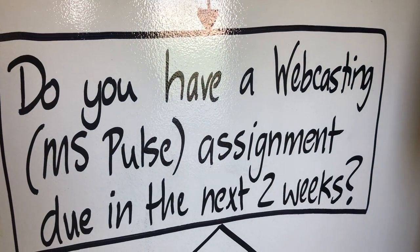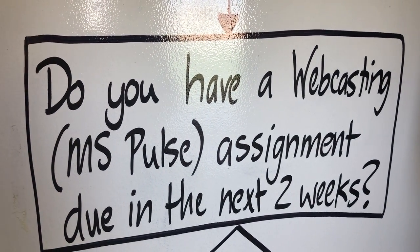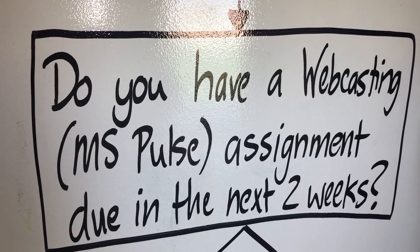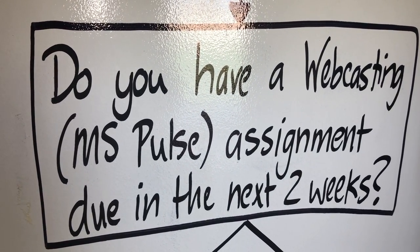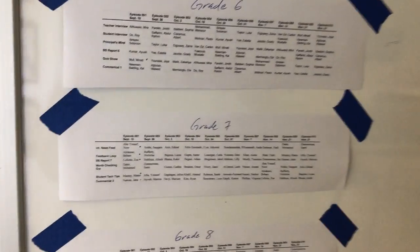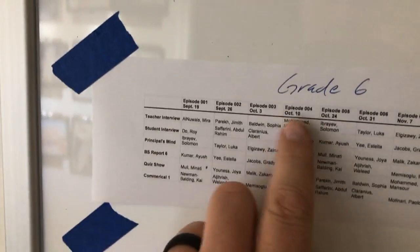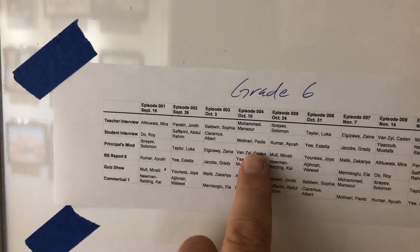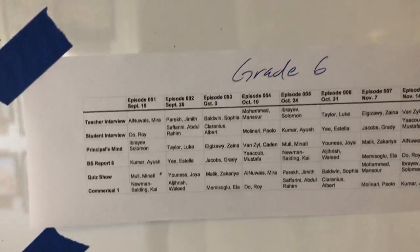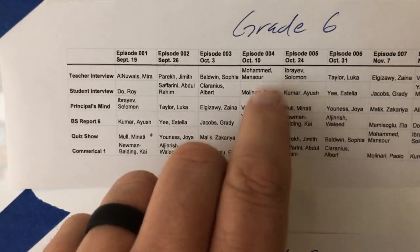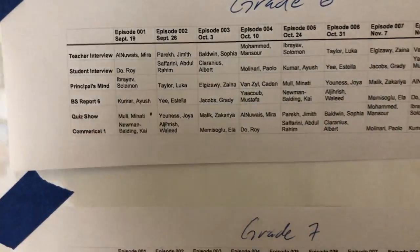Then you come down to this one: do you have a webcasting or middle school pulse — MS Pulse — assignment due in the next two weeks? If you're not sure, you simply turn around, come over to this whiteboard, and check the assignments. Check whatever date it might be, and see if your name is under that assignment, whether you're in grade 6, 7, or 8. Then you come back and you'll know — okay, there's my name, yes I do have something due, or maybe you don't.